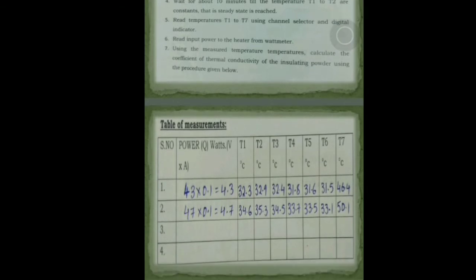We need to note down all the readings in the observation table, which consists of the power, that is the product of voltage and current, and then the temperatures from T1 to T7. T7 is the inside temperature, and outside temperatures can be calculated from the summation of T1 to T6, that is the average. The two readings that are shown in the following observation table are those which are obtained in the laboratory. From these following readings, we can easily find the thermal conductivity of the insulating material using the Fourier's law equation.